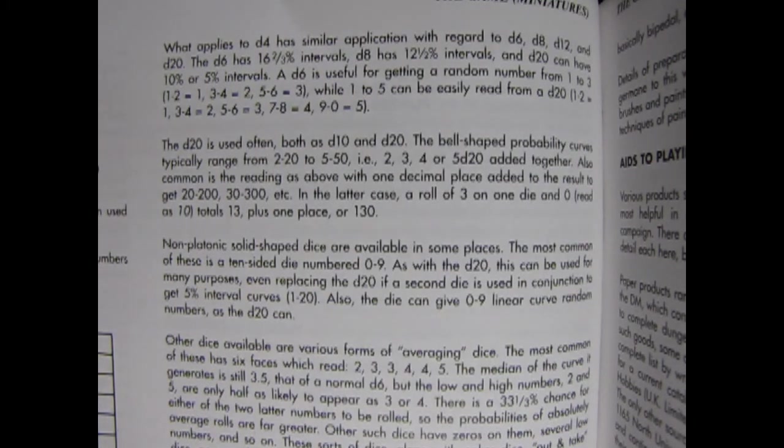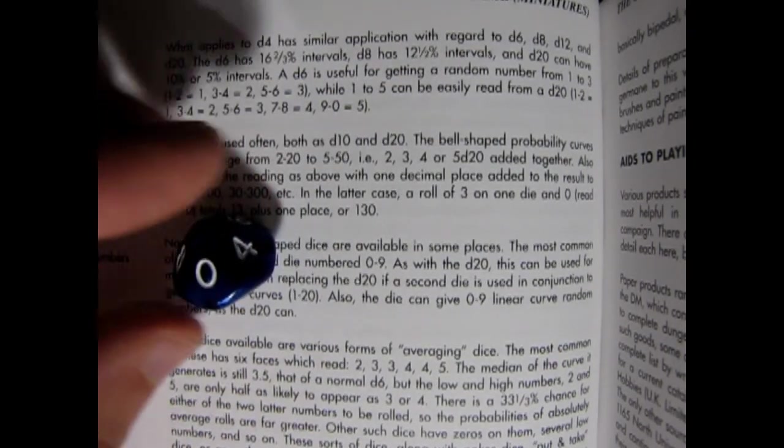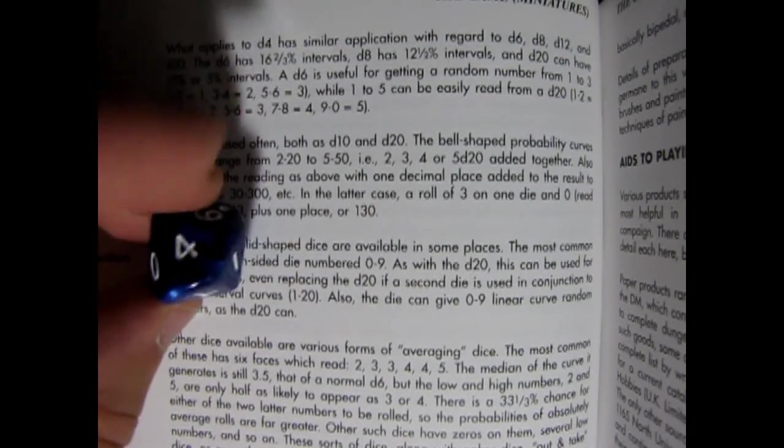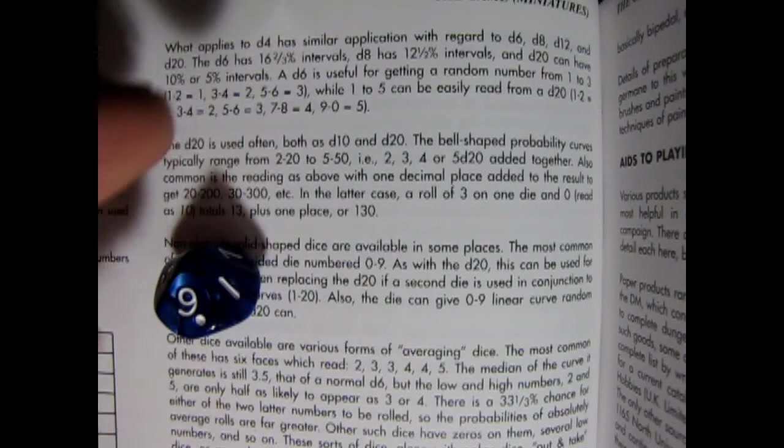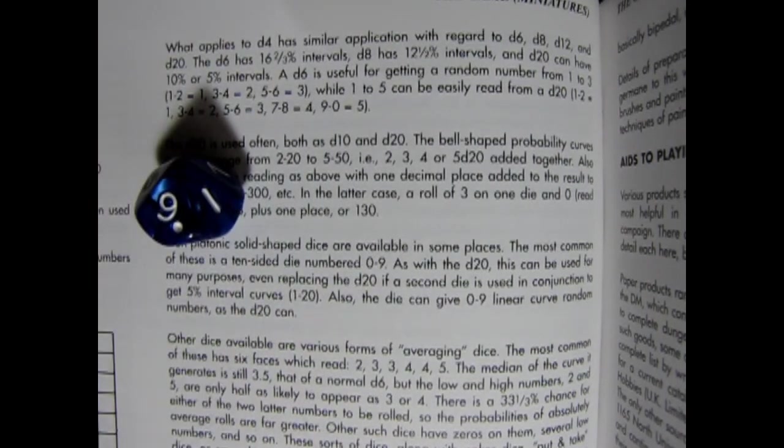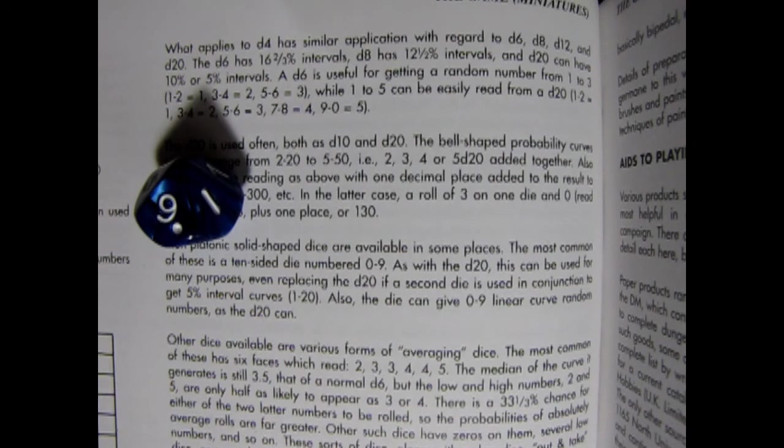Non-platonic solid-shaped dies are available in some places. The most common of these is a 10-sided die, which we have here, numbering from 0 to 9. As with the D20, this can be used for many purposes, even replacing the D20 if a second die is used in conjunction to get 5% interval curves. Also, the die can give 0 to 9 linear curve random numbers as a D20 can.